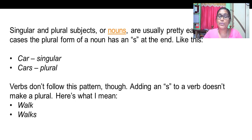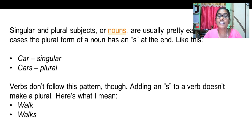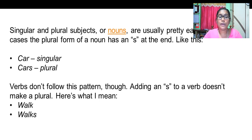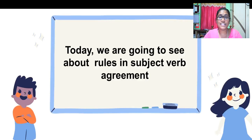Singular and plural subjects or nouns are pretty easy. The plural form of a noun has an S at the end — like singular is 'car', plural is 'cars'. Verbs don't follow the same pattern. Adding S to the verb doesn't make it plural at all.